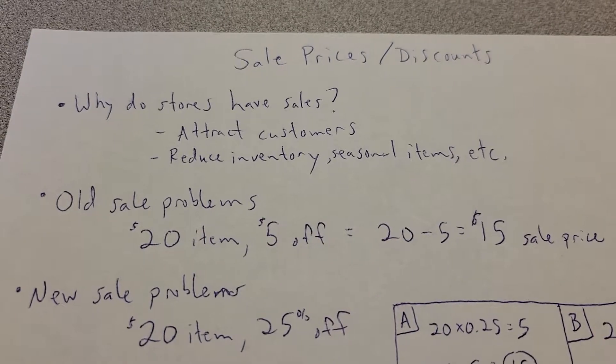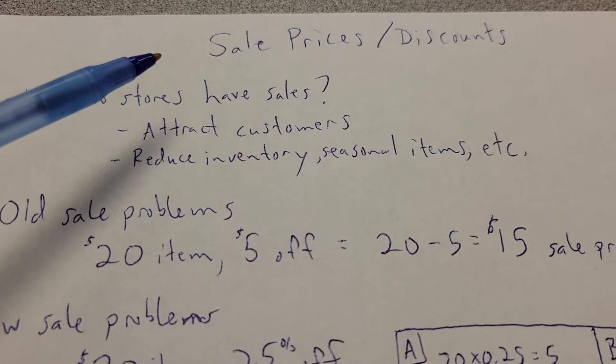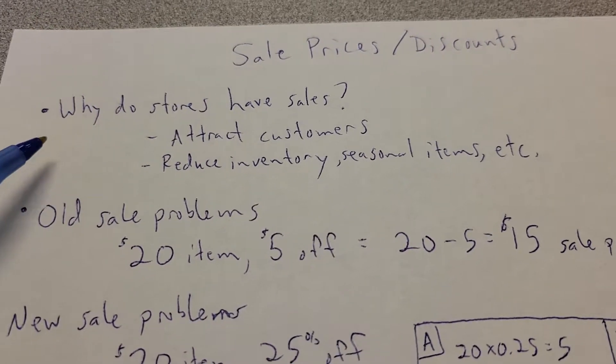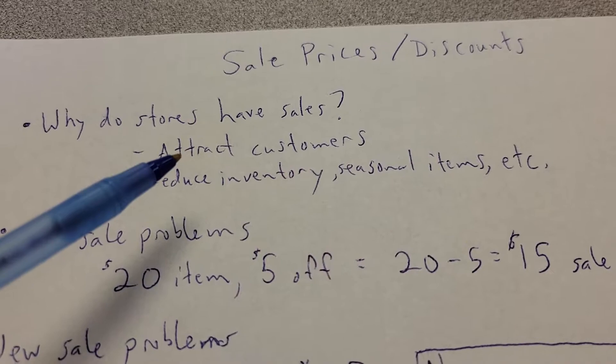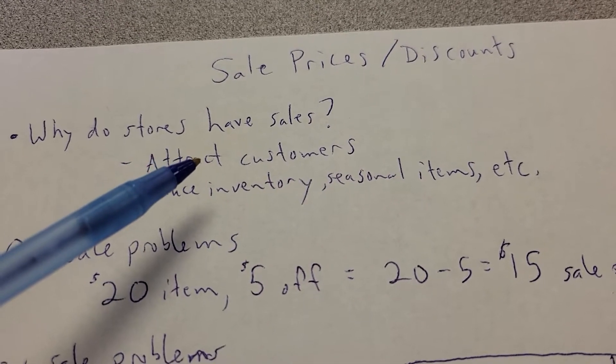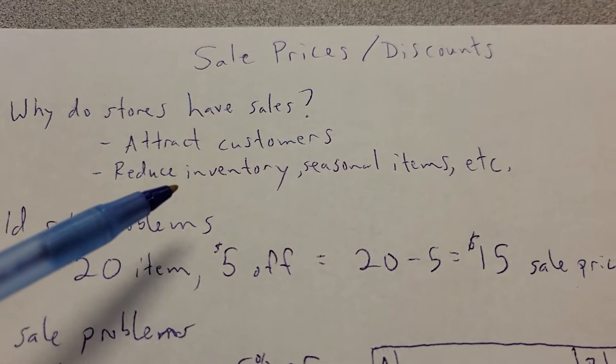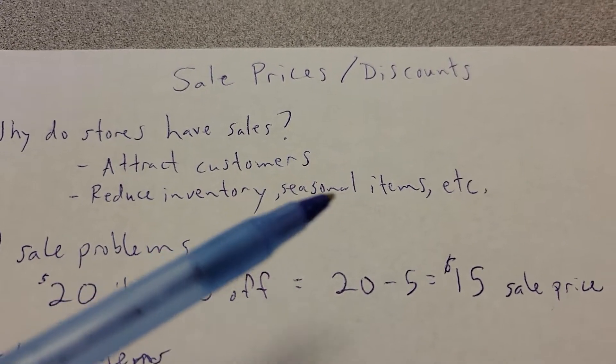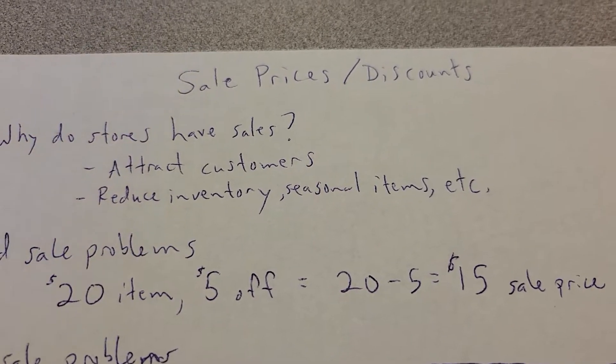Alright, what we're going to work on today for real-world math is sale prices and discounts. Now, why do stores have sales? Well, to attract customers, to bring traffic into the store. If you come in to buy some sale items, you're probably likely to buy other items as well at regular price. And also to reduce inventory and seasonal items. They want to put at a cheaper price, people will be more likely to buy them and then clear them off their shelves.